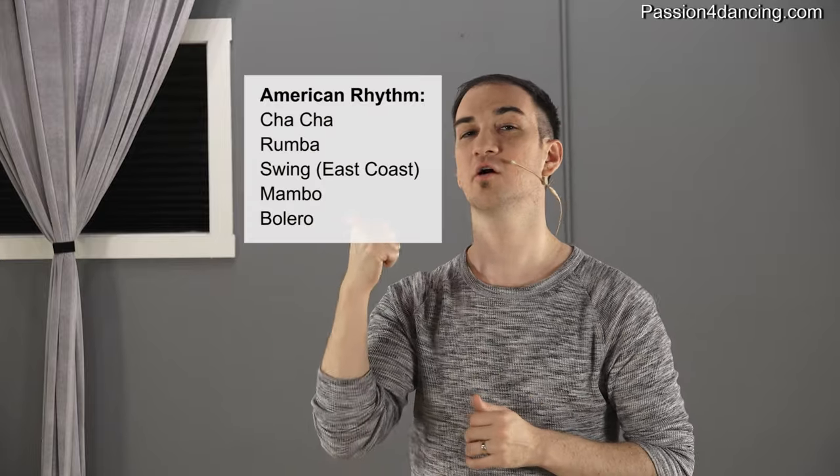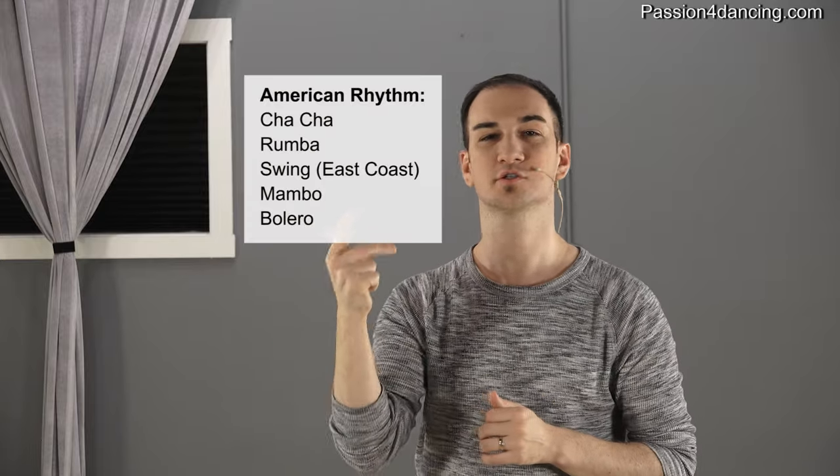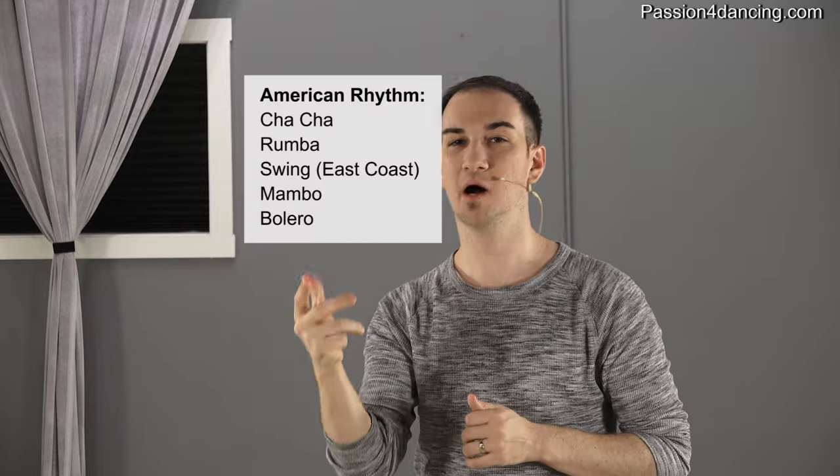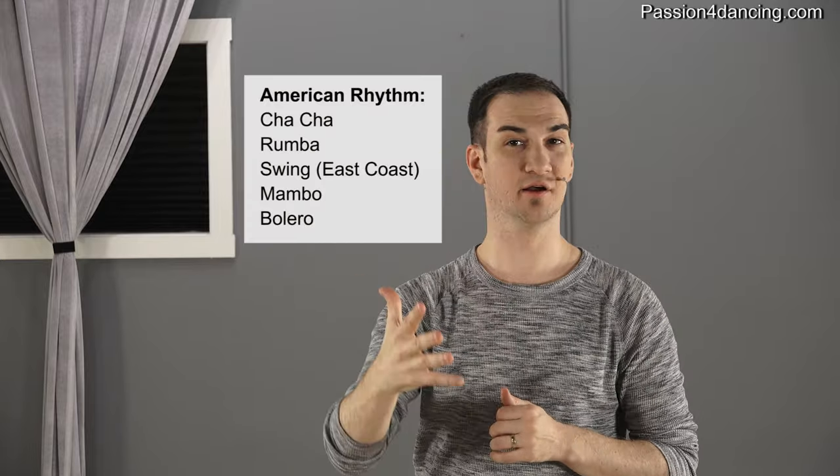Now there's the American style, which is also broken down into two further styles. The first is American rhythm, which includes cha-cha, rumba, swing, mambo, and bolero.